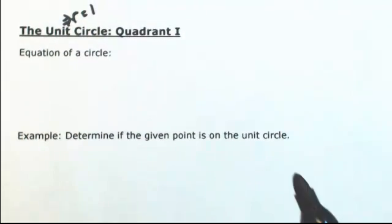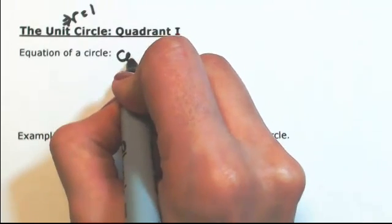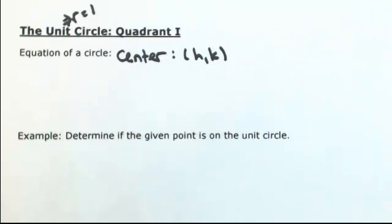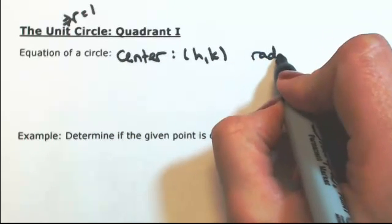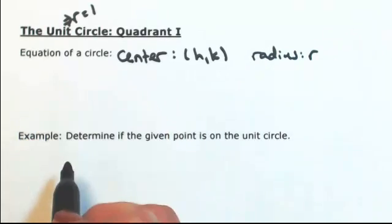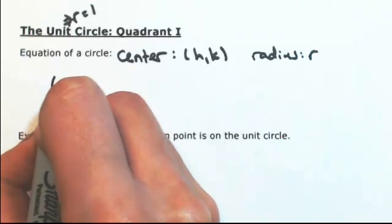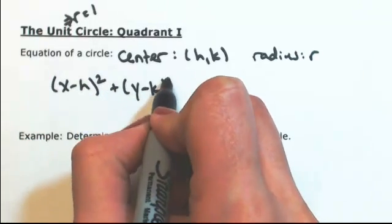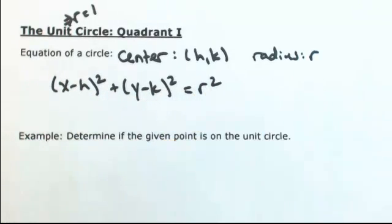Let's look at a regular circle with a center of h, k and a radius of r. The equation of a circle is x minus h quantity squared plus y minus k quantity squared equals r squared.